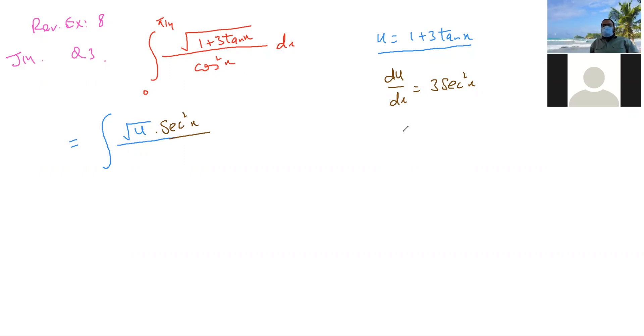Now, we need the dx from here. Now the dx is going to be du over 3 secant square x. And here you go, this is going to be du over 3 secant square x. So you must see that by just waiting for a moment, we can get rid of this nasty terms. Now it's time to change the limits.